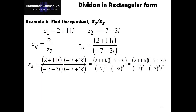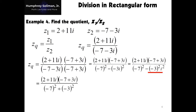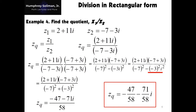After that, we need to simplify the denominator as the square of the first term minus the square of the second term — the special product of sum and difference of a binomial. Having i squared beside negative 3 squared gives negative 1, so the second term becomes plus the square of negative 3. Simplifying our denominator will give us 58. For the numerator, we use the process from example number 3. This gives us zq equals negative 47 over 58, minus 71 over 58i, as our final answer.